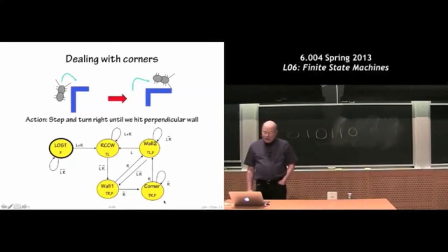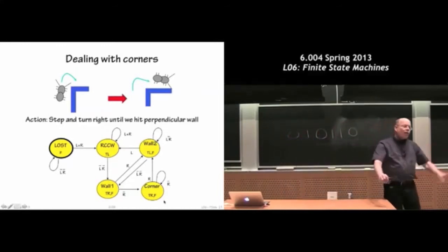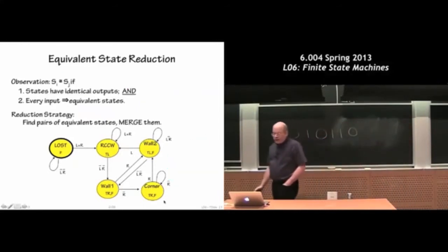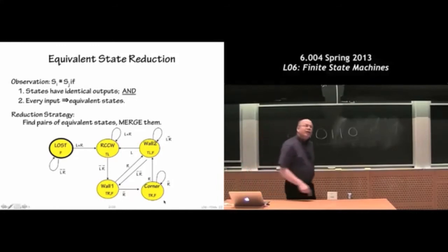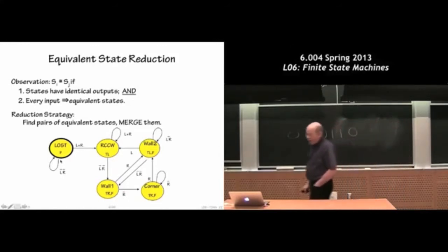OK, is this the best we can do? In particular, did you notice sort of the similarity between traveling down a wall and then processing a corner? So it turns out that this five-state machine actually contains some equivalent states. So we look at this machine. Two states are equivalent if they have identical outputs. In other words, I'm telling the ant to do the same thing in the current state. Are there states in this diagram where we're giving the ant the same control signal?